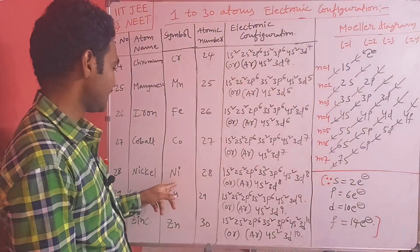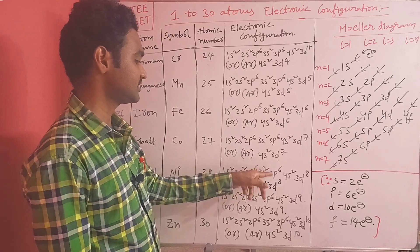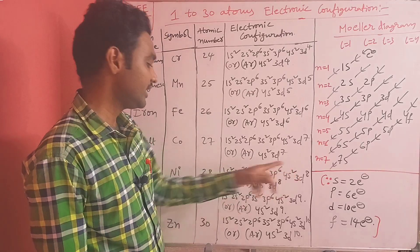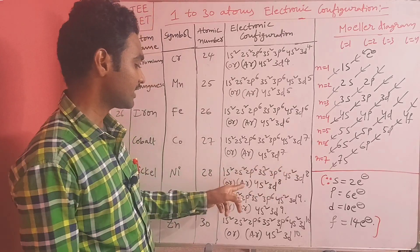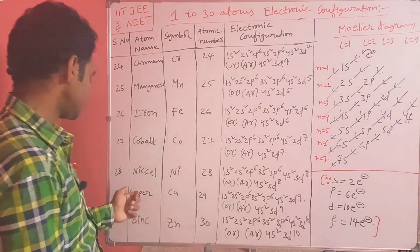Nickel (Ni), atomic number 28: 1s2 2s2 2p6 3s2 3p6 4s2 3d8, overall [Ar] 4s2 3d8.